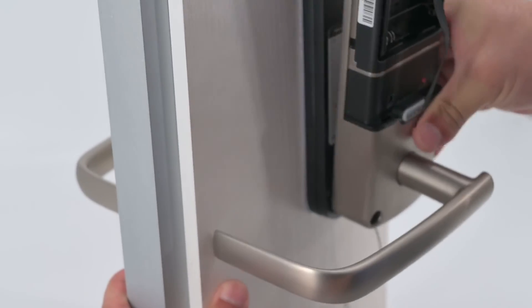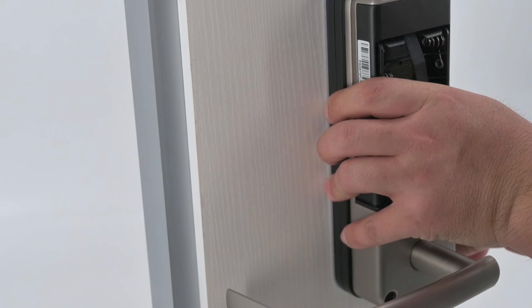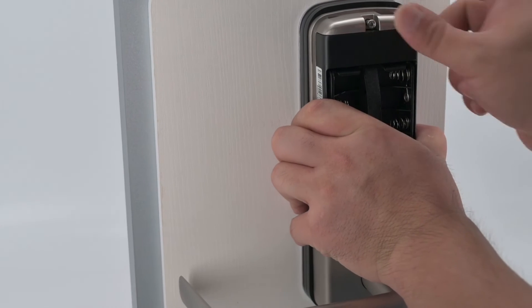Align the spindle C to the lock interior and attach the interior assembly to the interconnection plate. The interior assembly sits securely onto the plate. Secure with three screws AE.